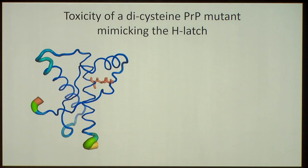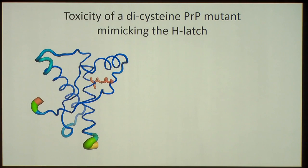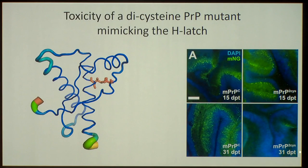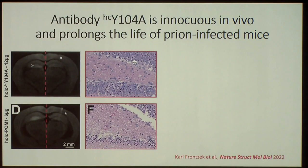Can we actually corroborate this? Can we induce the hydrogen latch in some other way? One thing we did was to put in two cysteines exactly at these residues to create a latched, rigidified conformation in the absence of the antibody. If the prediction is correct, this should be toxic. This di-cysteine mutant was packed into an adeno-associated virus and transduced into Purkinje cells. After 30 days, the normal prion protein is still expressed, whereas the di-cysteine mutant has killed the Purkinje cells. So in organotypic slices, simply creating and rigidifying this part suffices to damage the Purkinje cells.